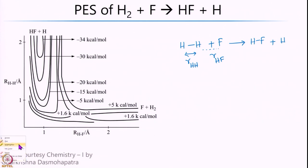You start with the H2 plus F system on the far right side, and as you come across you hit a small bump or saddle point. Once you cross that, you end up going way deeper in energy — from about 1.6 kcal per mole to about minus 34 kcal per mole. This is because you form a very strong HF bond with an equilibrium bond length of about 0.93 angstrom. Both H2 and F come closer together, crossing a small barrier of about 1.5 to 2 kcal per mole, then going lower in energy to form the significantly stable HF bond.